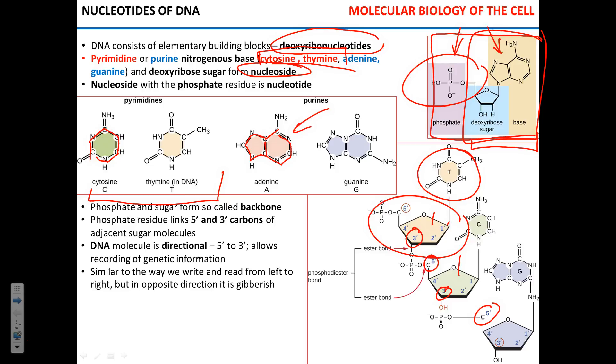Nucleotides are not connected 3 prime to 3 prime, or 5 prime to 5 prime. Always, 3 prime and 5 prime are the carbons of two adjacent nucleotides, two adjacent deoxyribose residues that are connected by phosphate. Now, what implication does it have? It has an implication of reading.